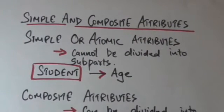First is simple and composite attributes. Those attributes which cannot be divided into subparts are called simple attributes or atomic attributes. For example, age attribute of a student entity.